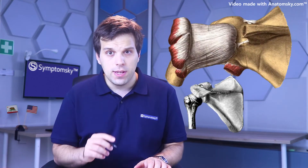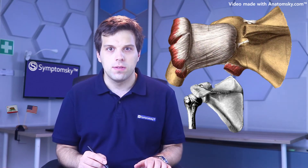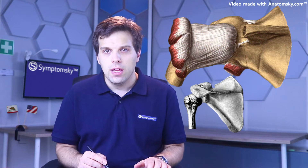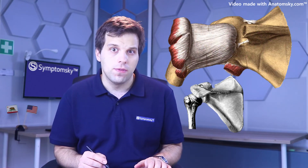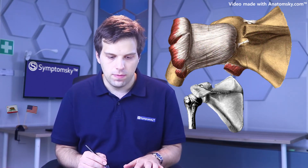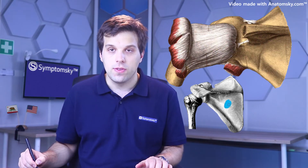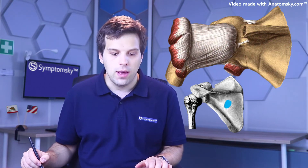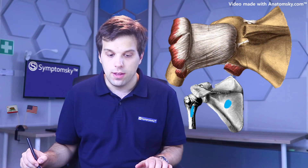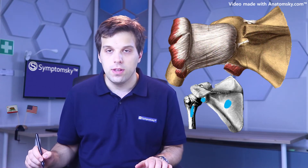The first test I want to talk about is the empty can test. It is used to test the function of the supraspinatus muscle. What you can see here is the scapula and this is the humerus — they articulate here in the glenohumeral joint.